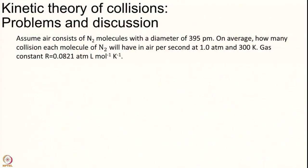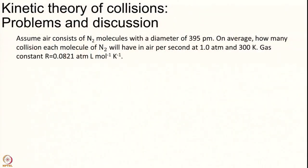Our first problem of today is that let us assume our air has only nitrogen gas. Nitrogen can be assumed to have some particular radii. I have given you a diameter of 395 picometer and the question is how many collisions each molecule of N2 will be having per second in regular conditions of pressure of 1 atmosphere and temperature of 300 Kelvin.